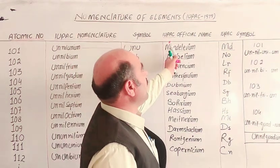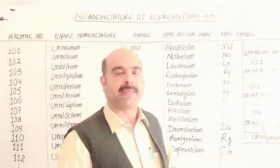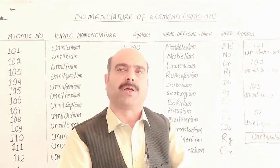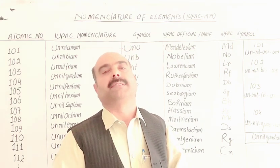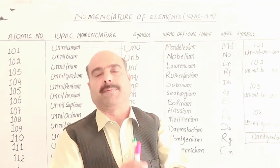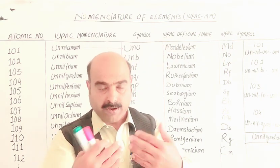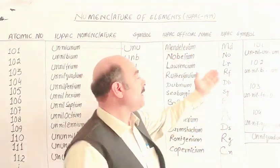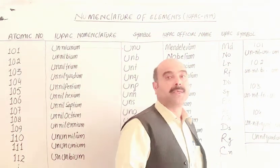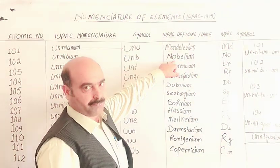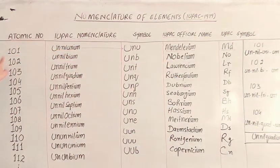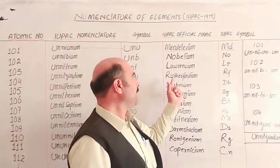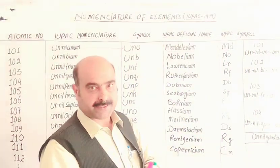The element Mendelevium is placed in the periodic table with atomic number 101 and symbol Md. Nobelium has atomic number 102. Lawrencium follows, and then Rutherfordium — named after the scientist Rutherford who discovered it.